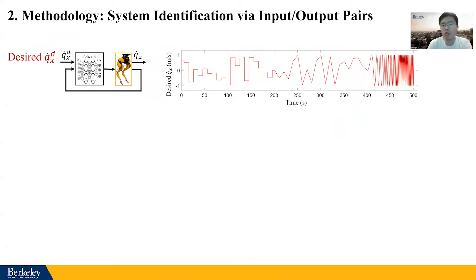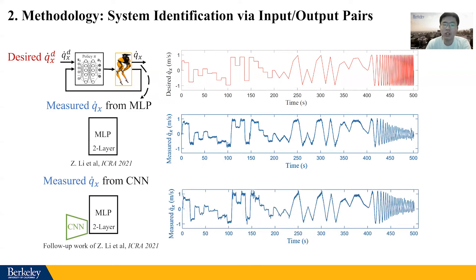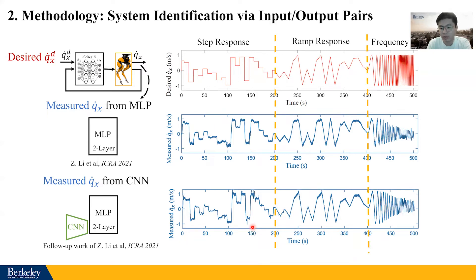Taking the walking velocity as an example, the input contains a step input, a ramp input, and the chirp signal, which is a swept-frequency sine wave. We can measure the robot's actual Vx using the MLP policy we developed, and we can also test on different policies with different neural network structures. By looking at the input-output pairs, we can obtain the system step response, ramp response, and frequency response.